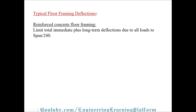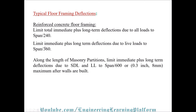Typical floor framing deflections for reinforced concrete: total immediate plus long-term deflection due to all loads is limited to span/240 including dead and live load deflection. Immediate plus long-term deflection due to live load only is limited to span/360 with masonry partitions. Immediate plus long-term deflection due to superimposed dead load plus live load is limited to span/600 or 0.3 inches (8 mm) maximum after walls are built — an additional practical check.